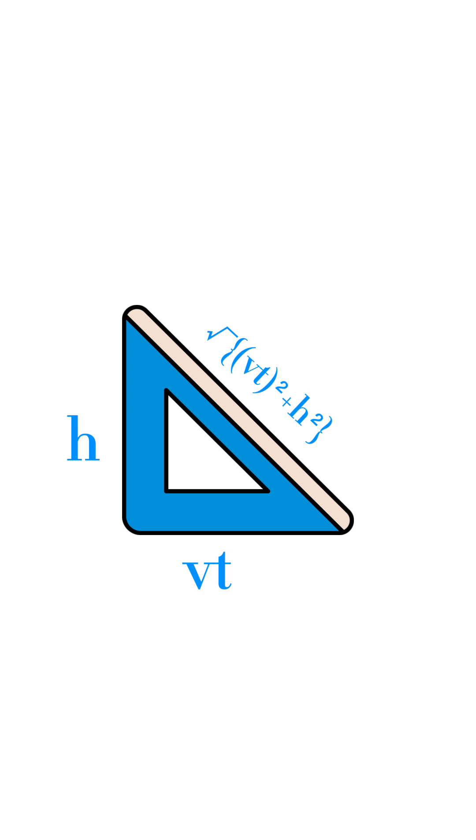Now if you determine the distance between 2 meters as h and distance traveled by the UFO as vt, then you will get that much length traveled by the photon.